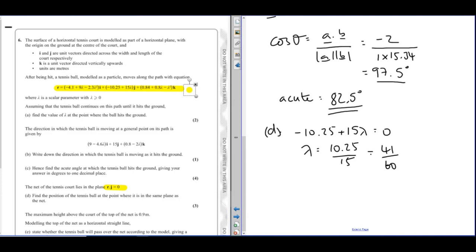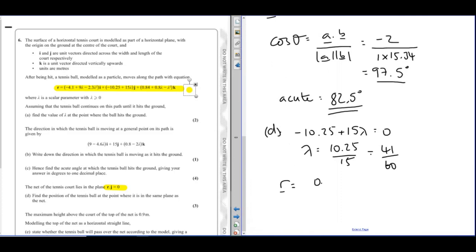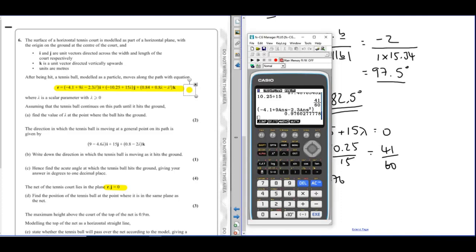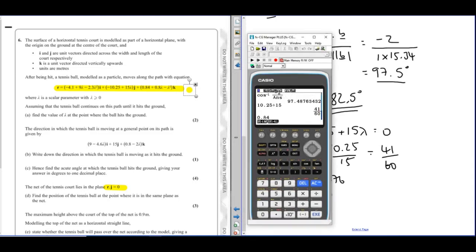It wants the position of the tennis ball, so finally then I've got to take that and sub that back into the equation for r. So I've got minus 4.1 plus 9 lambda minus 2.3 lambda squared. It gives me 0.976. We'll do it again. So minus 10.25 plus 15 lambda gives you 0. So that's what we had earlier. And then 0.84 plus 0.8 lambda minus lambda squared gives me 0.920.